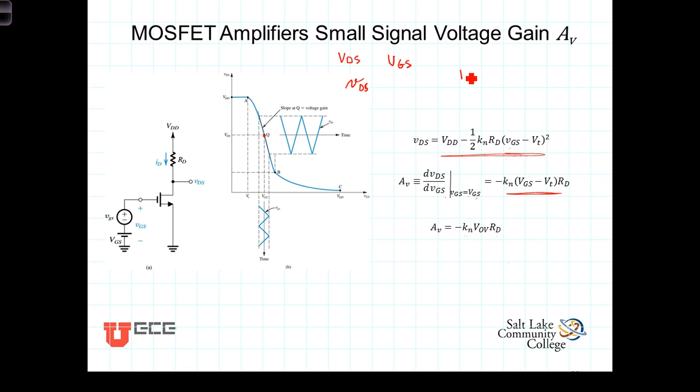K_n is equal to K_n prime, which is a property of the semiconductor, times the aspect ratio width over length. So the gain term is directly proportional to these. If you're designing the transistor yourself, you can increase the gain by increasing the aspect ratio of the width over the length. You're going to get more gain the wider the transistor is for a given length.